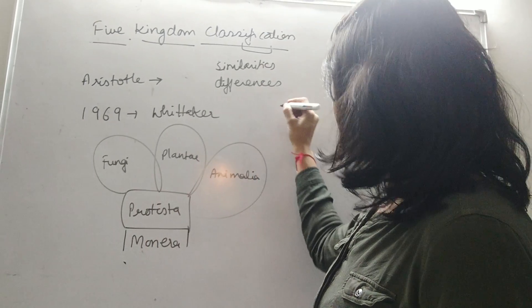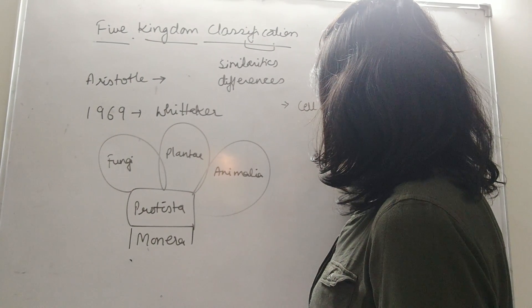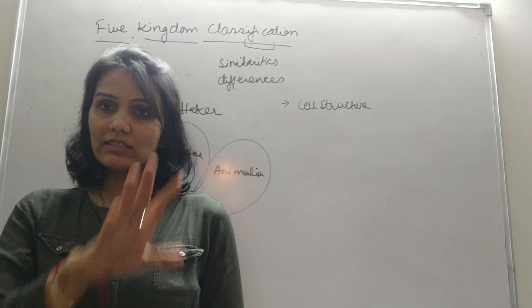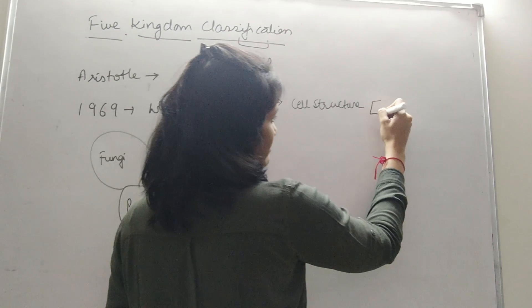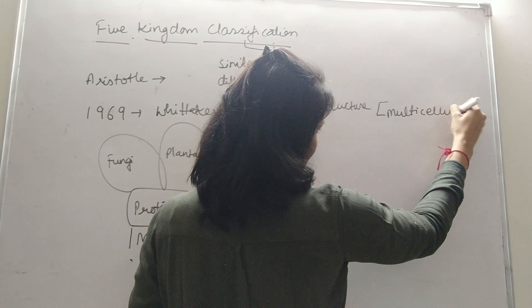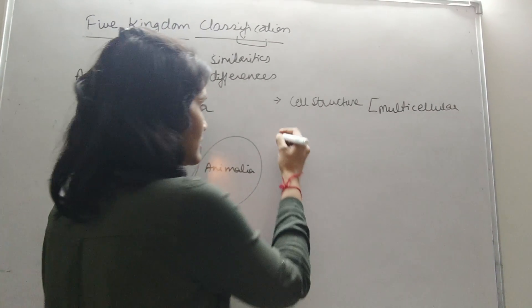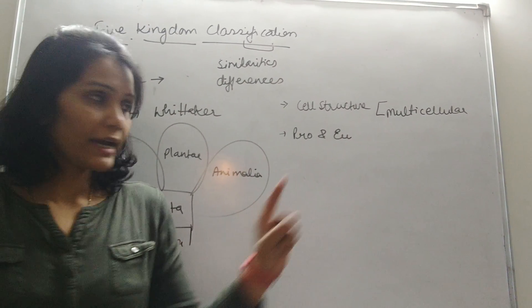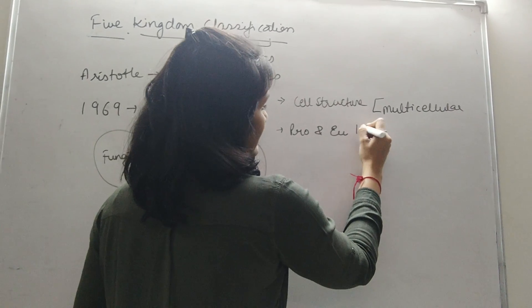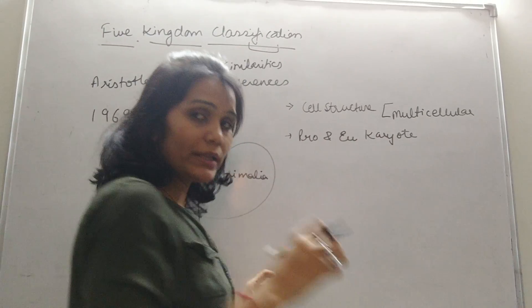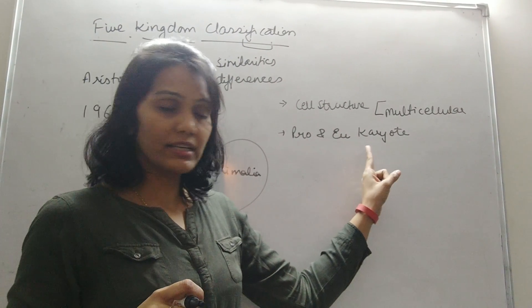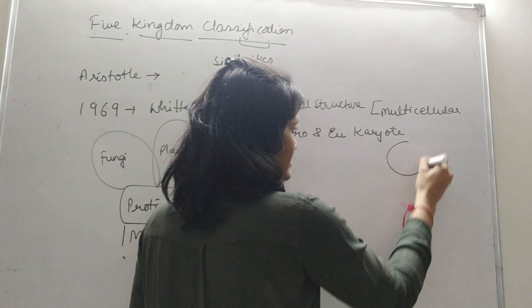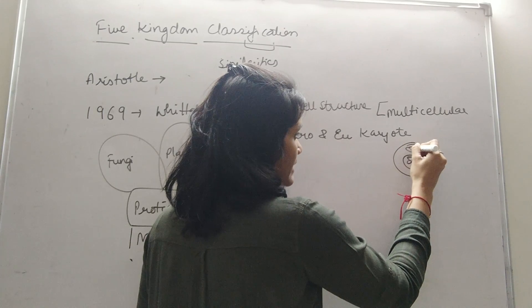The criteria include, first, cell structure — whether the organism is made up of a single cell (unicellular, like Amoeba) or many cells (multicellular, like human beings). The second criterion is complexity — whether they are prokaryote or eukaryote. 'Pro' means primitive and 'eu' means new; 'karyon' means nucleus. In prokaryotes they don't have a well-defined nucleus, while in eukaryotes the genetic material is inside the nuclear membrane with many cell organelles.